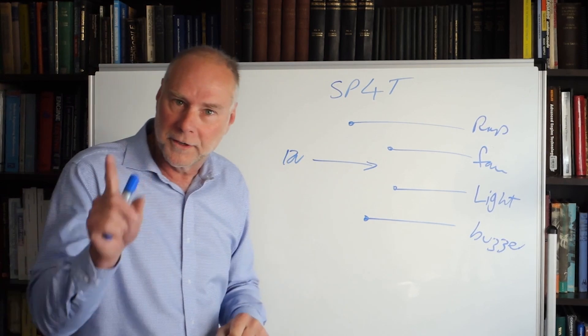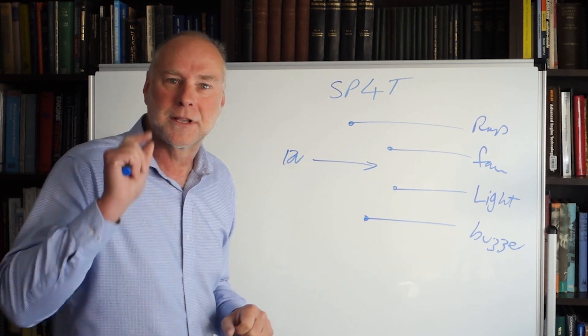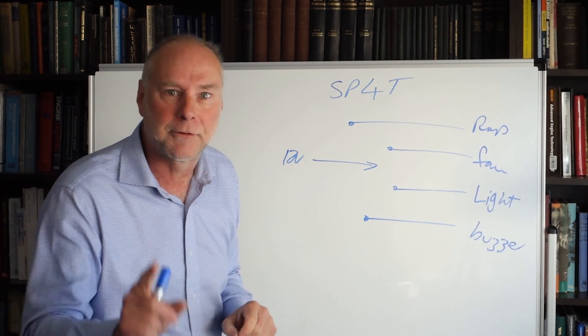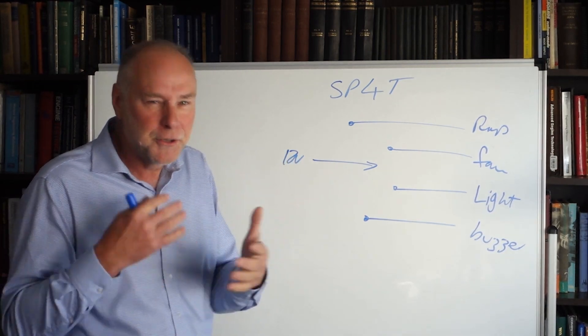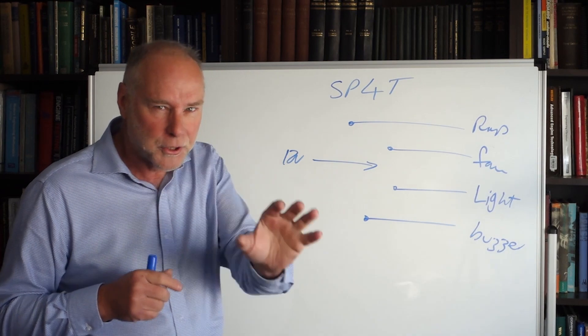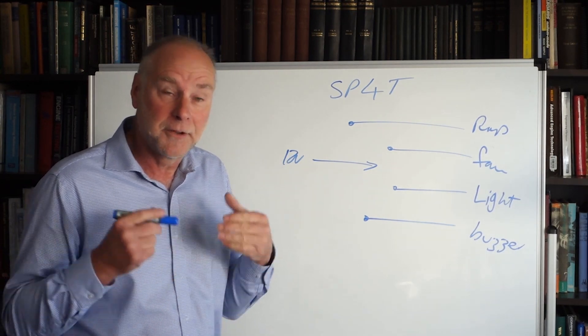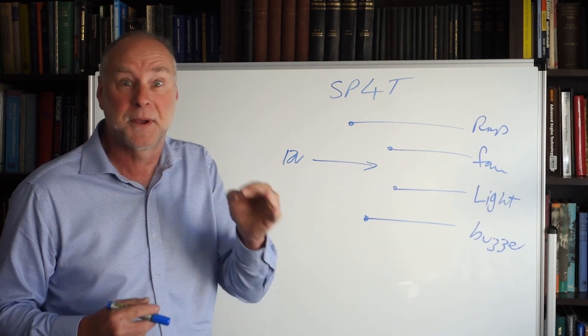So when you're looking at a switch how many poles has it got? Inputs? And how many throws has it got? How many positions can you switch that input to? And you can usually work a lot of that out by looking at the terminals that are on the back of the switch. If you can't do it from the terminals have a look at the specification sheet.